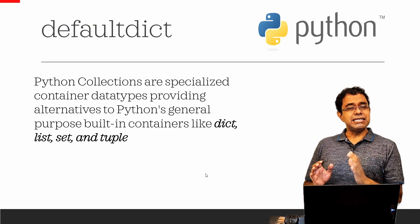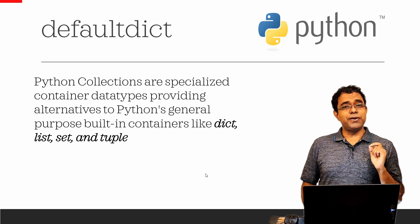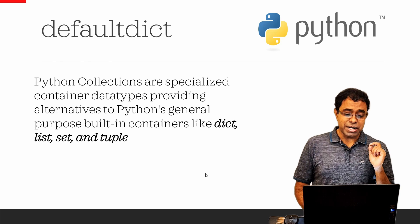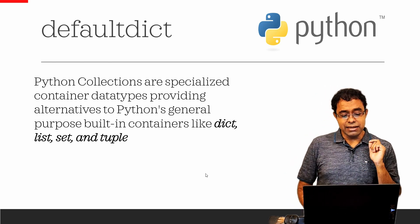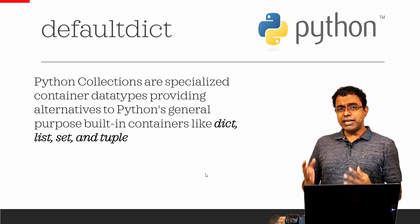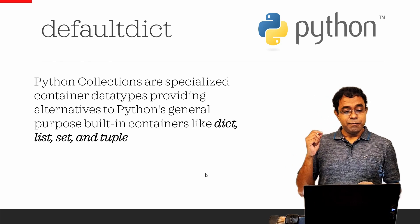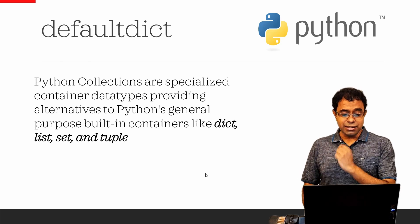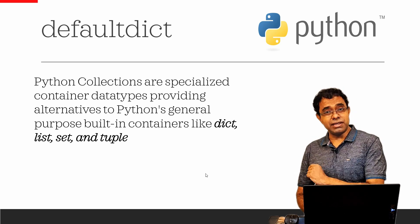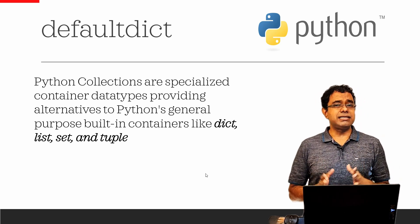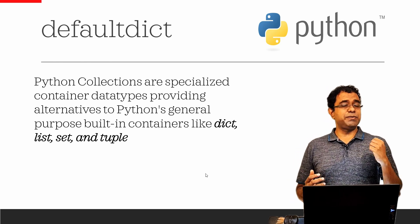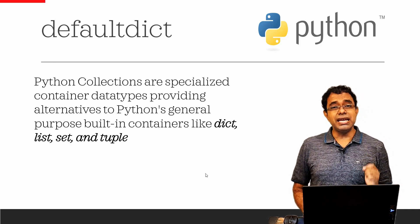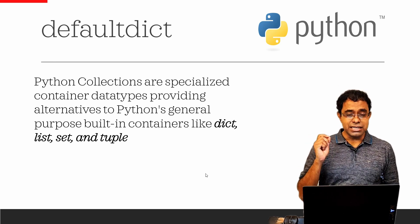Before that, let's understand a little bit about Python collections. Defaultdict is part of Python collections. Python collections are specialized container data types providing alternatives to Python's general purpose built-in containers like dict, list, set, and tuple. Collection containers can make your code more efficient, but this is not applicable for all scenarios — they are good in some specific cases.